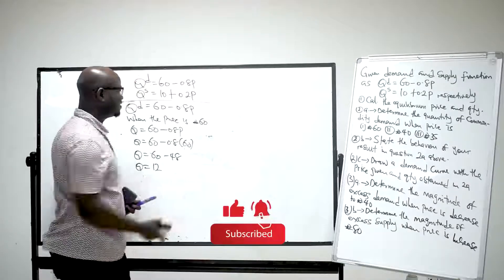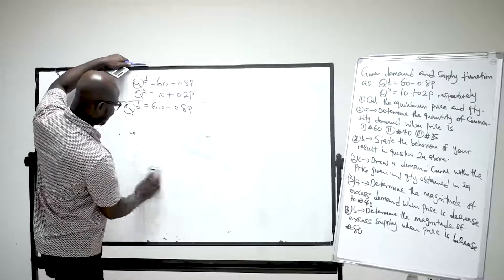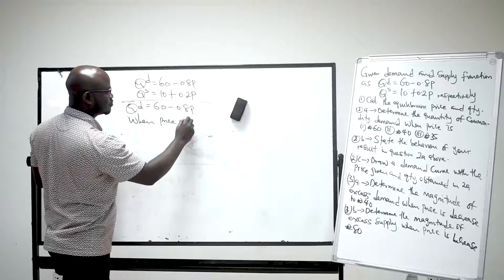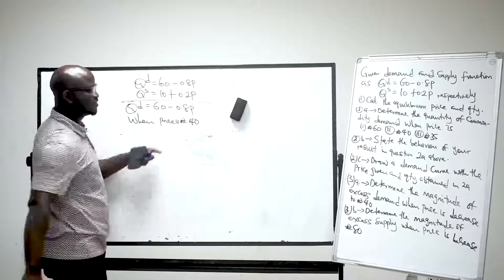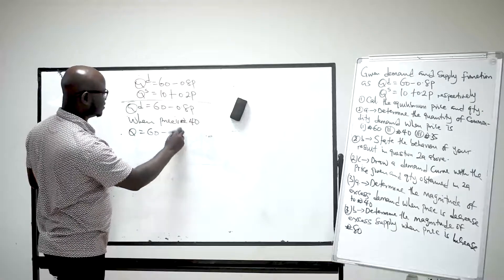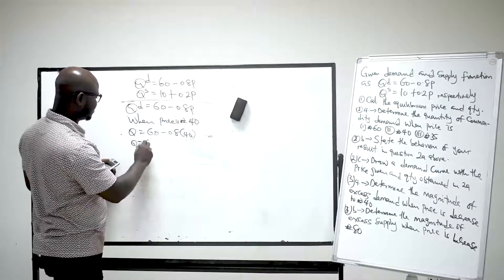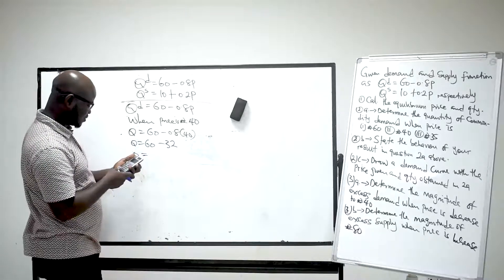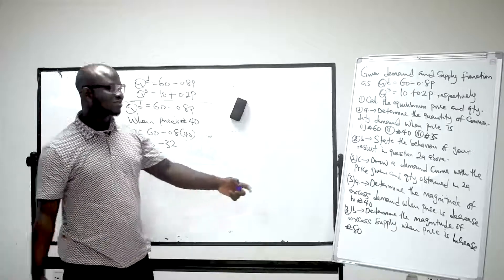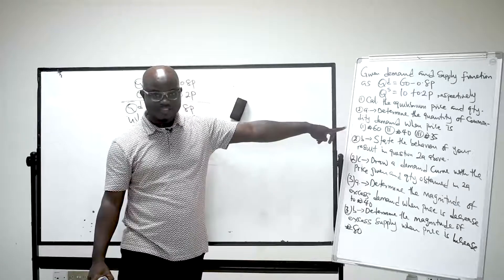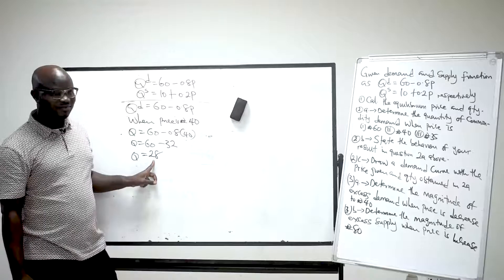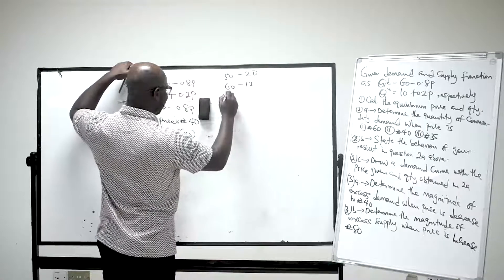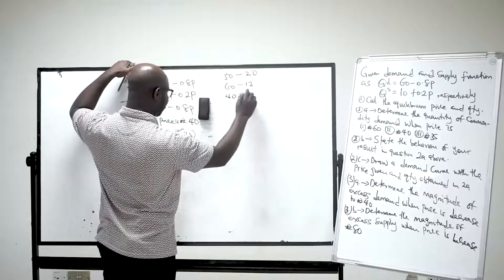When price is 40: Q = 60 − 0.8(40) = 60 − 32 = 28. So when price decreases from equilibrium 50 to 40, quantity demanded increases to 28. Take note: when price is 50 we have Q = 20; when price is 60 we have Q = 12; and when price is 40 we have Q = 28.